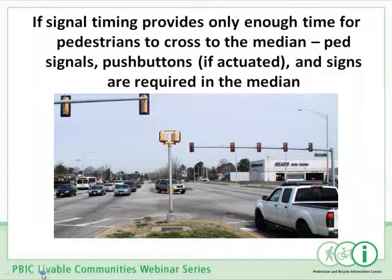This is a new provision — always good engineering practice, but now it's in the MUTCD as a requirement. If the timing of pedestrian signals only gives pedestrians enough time to cross to the median, requiring them to cross in two separate stages over two separate cycles, then pedestrian signals, push buttons if it's an actuated phase, and signs are now required in the median. It's not appropriate to strand the pedestrian in the median and hope they figure out what to do.